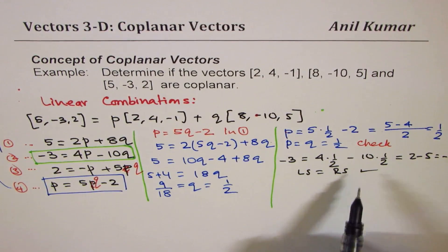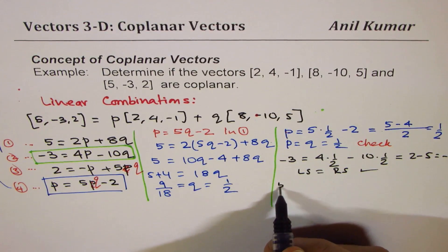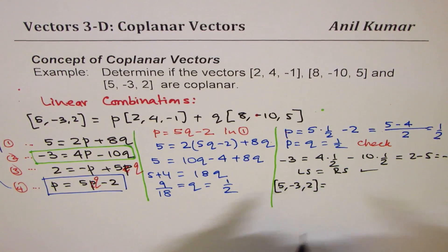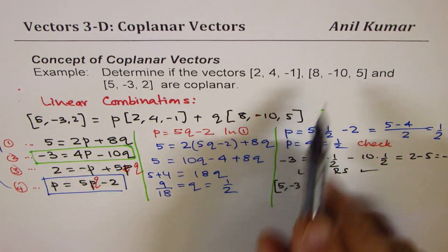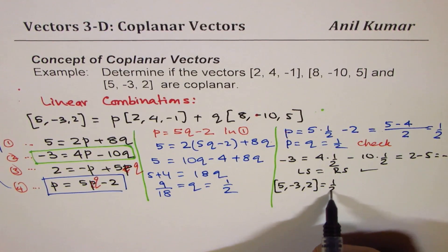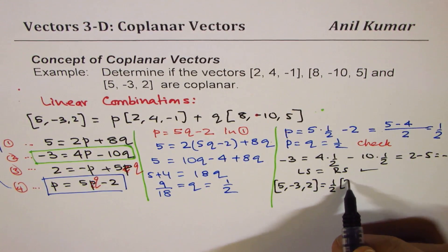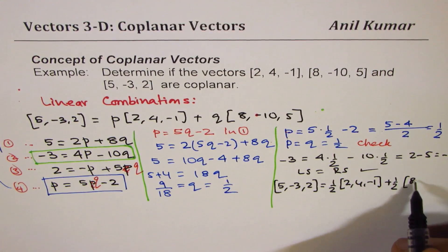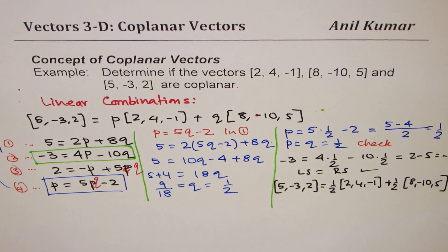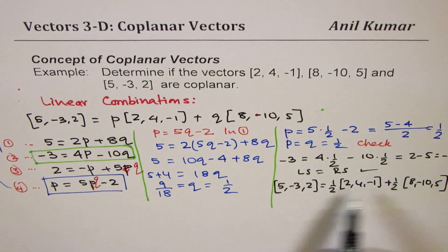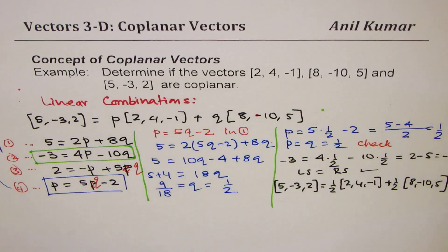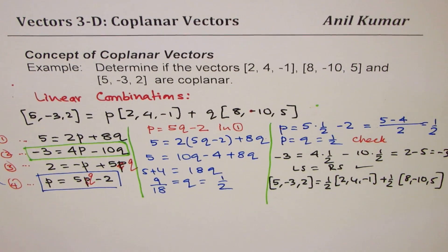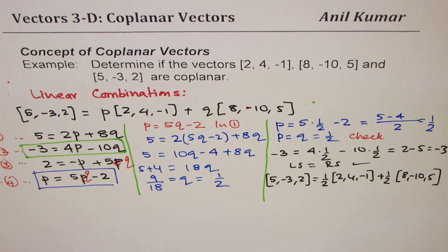And therefore, we can say that our vector [5, -3, 2] could be written as a linear combination of other two as 1/2 times [2, 4, -1] plus 1/2 times [8, -10, 5]. Since you can do it, that means all the three vectors are coplanar. That is how we could show that these three vectors are coplanar.